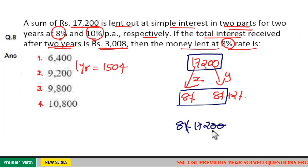Double zero and percentage cancel. 8 into 1, 72. 8 into 2, 16. 8 into 7, 56 plus 1, 57. 8 into 1 plus 5, 13. So 8% of 17,200 equals 1,376.